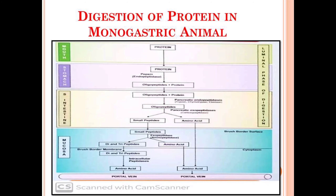Then in the presence of pancreatic exopeptidase, oligopeptides are converted into smaller peptides and amino acids, which are further converted into amino acids.